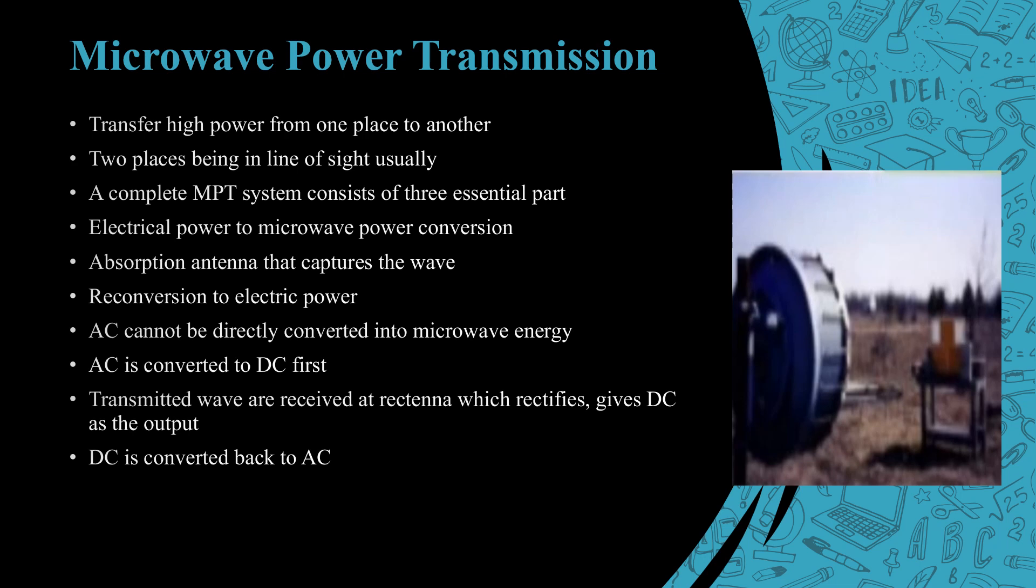Microwave power transmission: transfer of high power from one place to another, two places being in line of sight. Usually a complete system consists of three essential parts: electric power to microwave power conversion, absorption antenna that captures the wave, and the conversion to electric power. AC cannot be directly converted into microwave energy. AC is converted to DC first, transmitted, received at rectenna which rectifies and gives DC as the output. DC is converted back to AC.